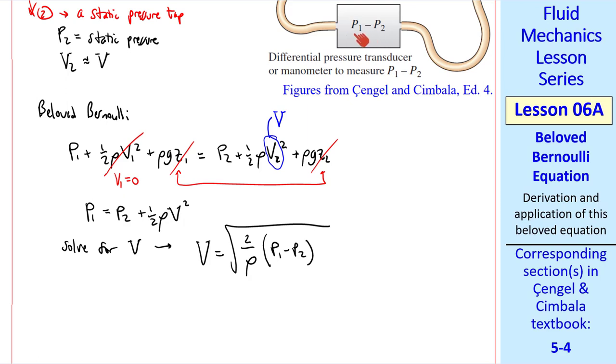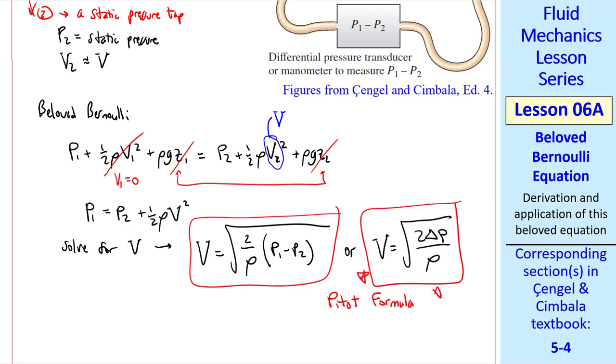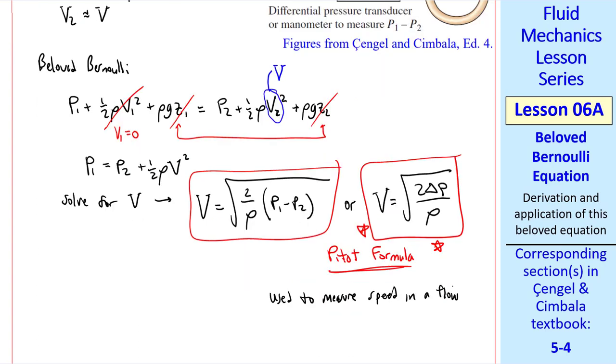Notice that this is what the transducer is reading. It's a differential pressure transducer. You can use a manometer instead. This transducer measures P1 minus P2. Or you can just call that pressure difference ΔP. So V is just the square root of 2ΔP over ρ. This is called the pitot formula, and it's used to measure speed in a flow.